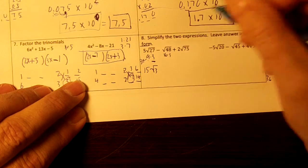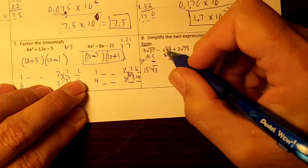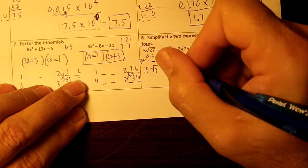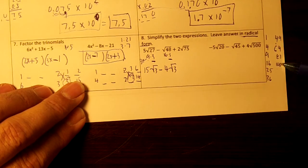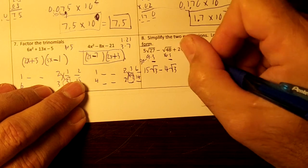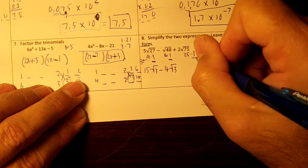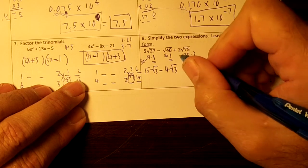So I have 16 times 3. Underline the 3. The square root of 16 is 4. And I have the minus. So minus 4 square root of 3. 75. 25 goes into 75, doesn't it? So 25 times 3. Underline the 3. The square root of 25 is 5.